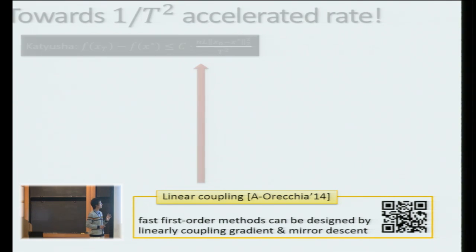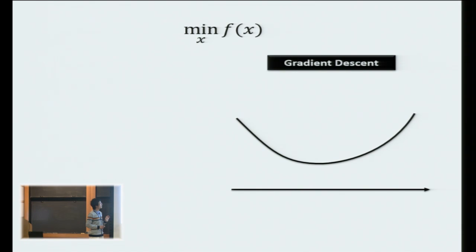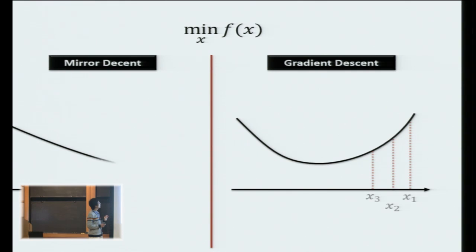let me remind you two classical analysis that people use to analyze first order methods. One of them is gradient descent. That basically says if in each iteration I can keep decreasing the objective value, then I could eventually converge to a minimizer of the function. This is pretty much, like, standard. Everyone knows that. But in fact,